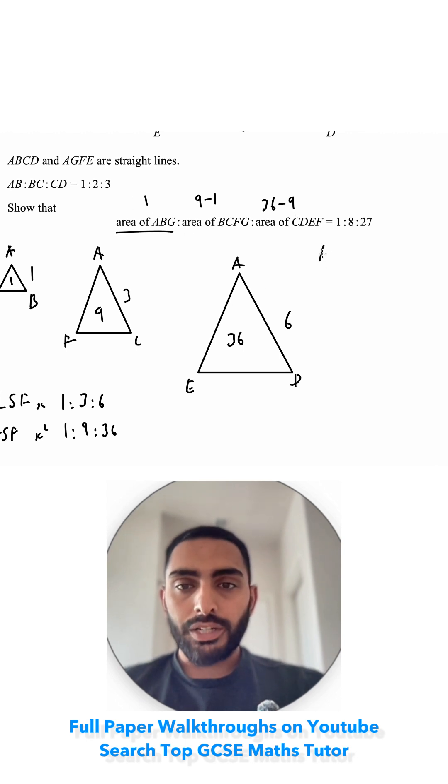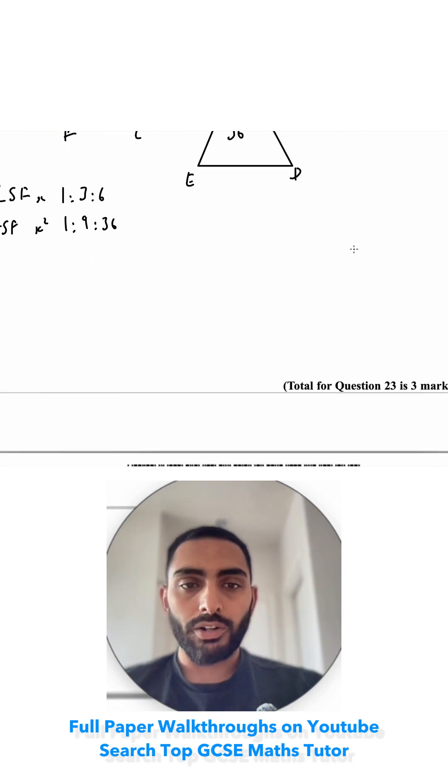So ABG is just 1. Then BCFG is 9 take away 1, which is 8, and it matches up with that. And then CDEF is 36 minus 9, which is 27. And you can see our answer matches up with their answer.